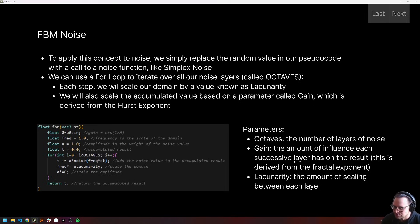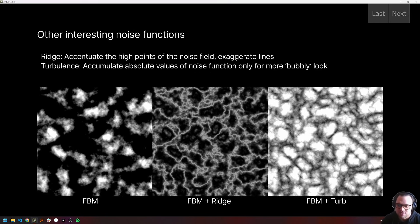As you can see here, furthest to the left, and then there's a couple of other interesting functions that we're going to talk about today, which we can kind of apply on top of the noise to further extract interesting behavior. One of those is going to be a ridge function, which will accentuate the high points of the field. As you can see, kind of the edges get accentuated here and there's some more detail in the darker spots.